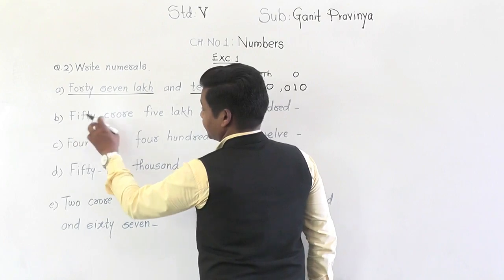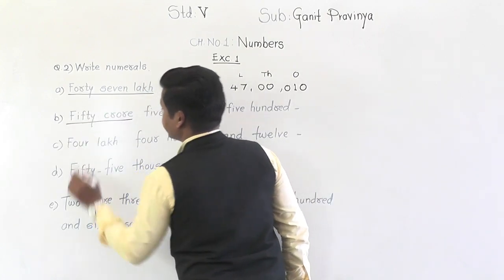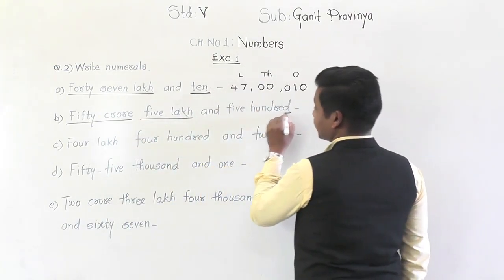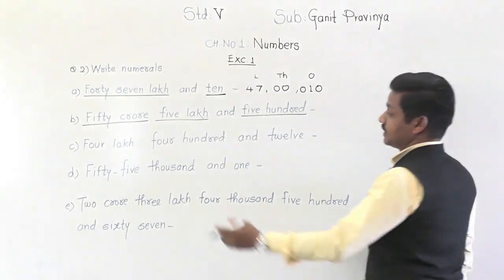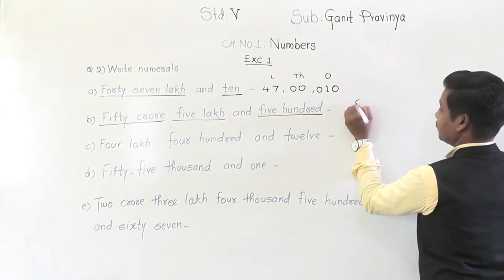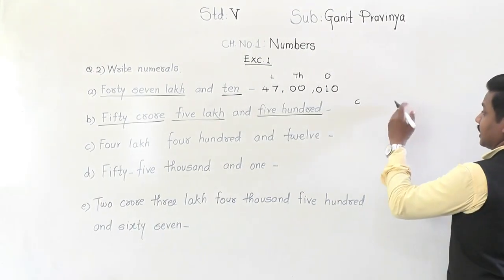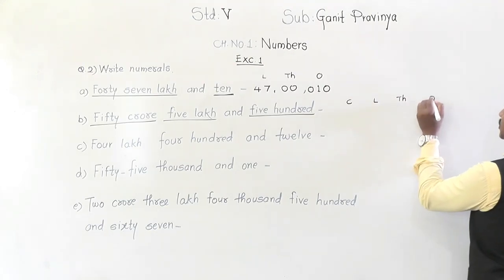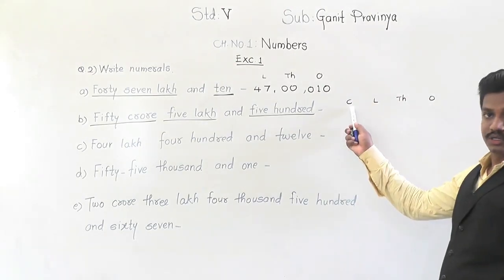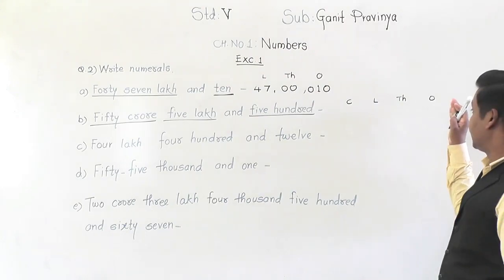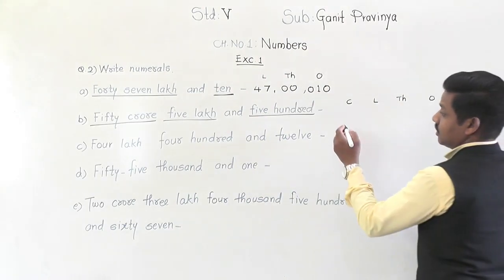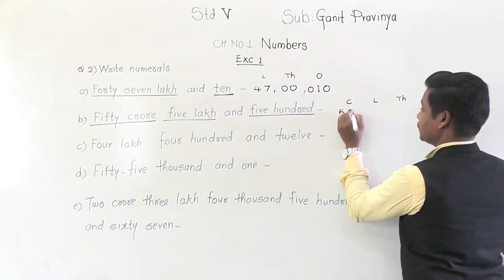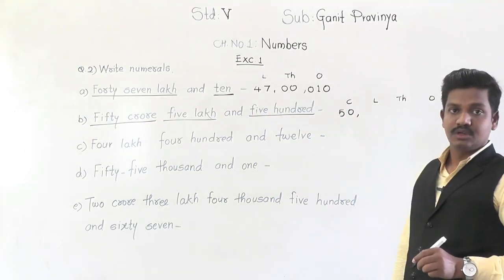Next: 50 crores, 5 lakh, and 500. As the starting group is crores, write crores first. In the crore group there is 50 — write 50. In the lakh group there is only 5 lakh — remember, lakh has two places: lakh and ten lakh — so write 05.